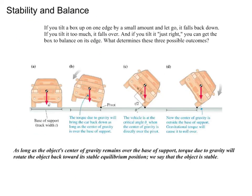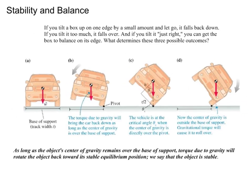This leads to stability and balance. If we tilt a box up on one edge by a small amount and let go, it falls back down; tilt it too much and it falls over; tilt it just right and it balances on its edge. What determines these outcomes is the center of gravity. For a vehicle up on two wheels, as long as the center of gravity is below the pivot it returns down. When the center of gravity is directly over the pivot, we reach a critical angle — past that, the car tips over. As long as the center of gravity remains over the base of support, torque due to gravity rotates the object back to stable equilibrium.